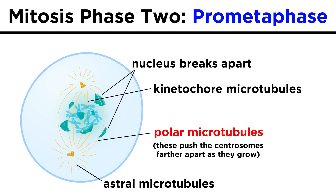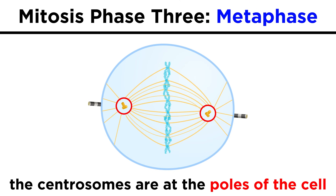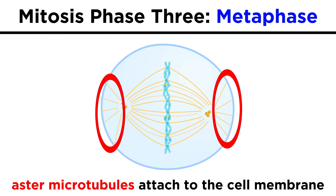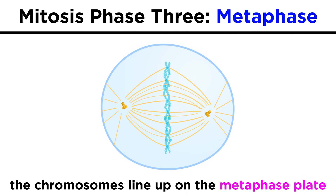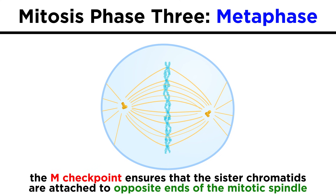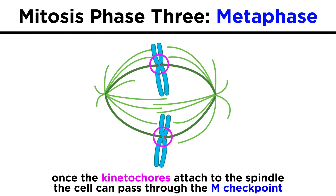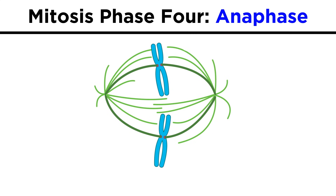Things are starting to get organized as a kind of tug of war plays out. Then in the metaphase, the centrosomes have settled at the poles of the cell, with the asters attaching to the plasma membrane, and all of the chromosomes have been arranged nicely along a plane in the middle of the cell — this imaginary plane is called the metaphase plate. At this stage, there is a checkpoint to ensure that each pair of sister chromatids is firmly attached to opposite ends of the mitotic spindle. Once all the kinetochores are attached and everything is lined up nicely, a regulatory protein complex becomes activated, allowing the cell to pass through the M checkpoint.